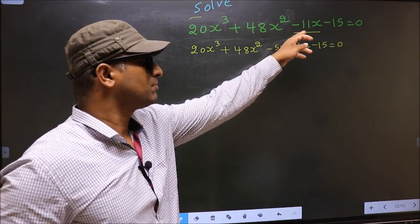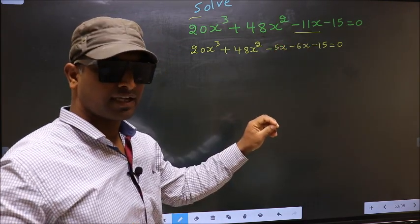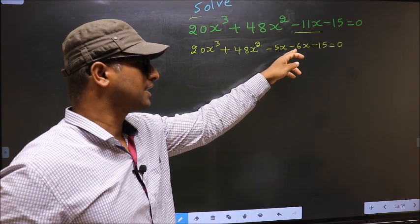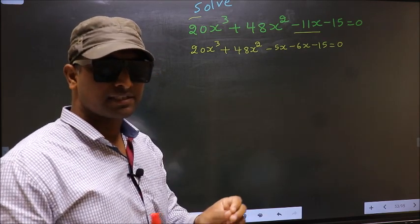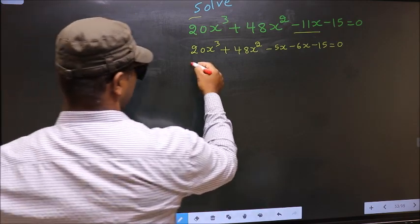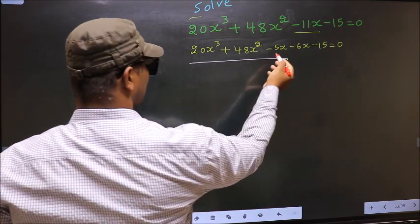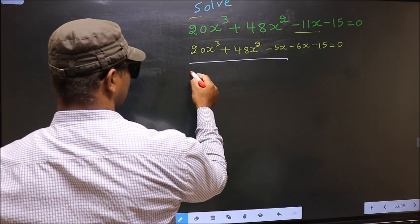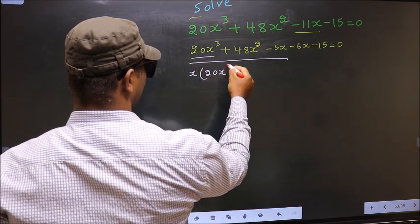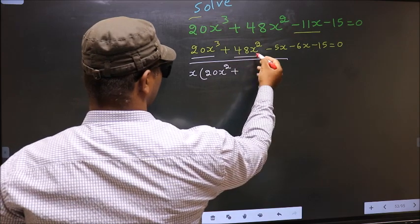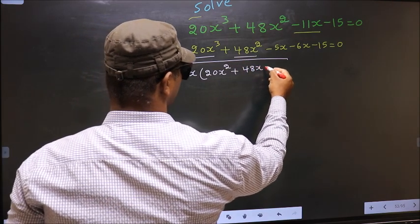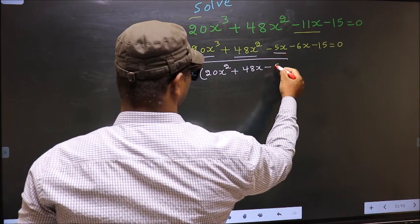In place of -11x, I have written -5x - 6x. Now from the first three terms, what can be taken out common is x. So here you get x(20x² + 48x - 5).